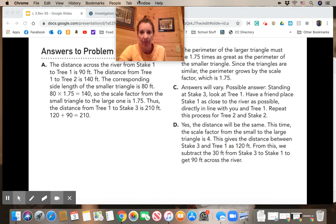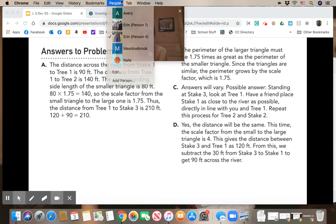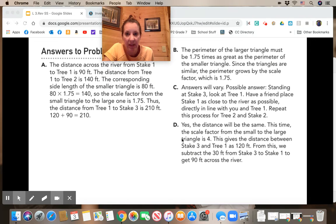You had to either do 120 plus 90 is 210, or 210 minus 120 is 90. In question b, the perimeter of the larger triangle must be 1.75 times as great as the perimeter of the smaller since the triangles are similar. The perimeter would grow by 1.75.